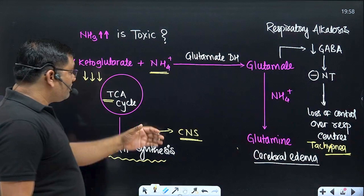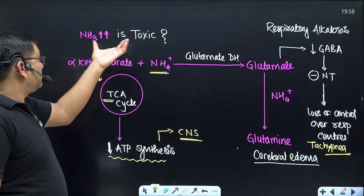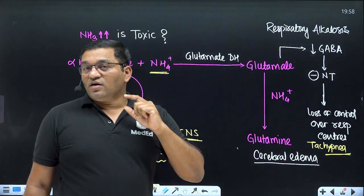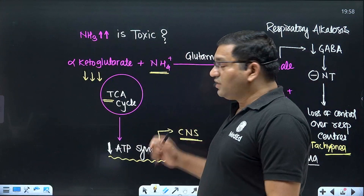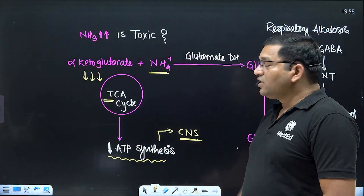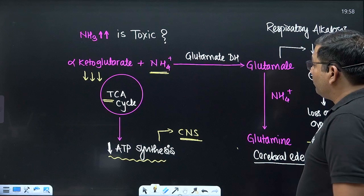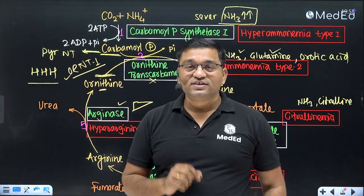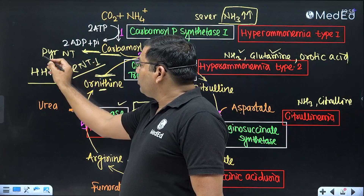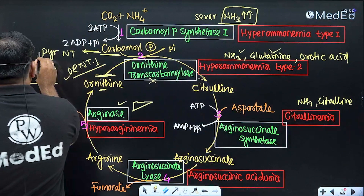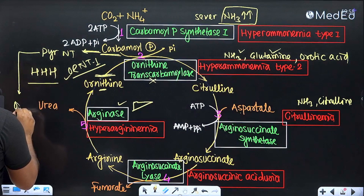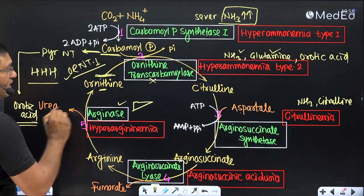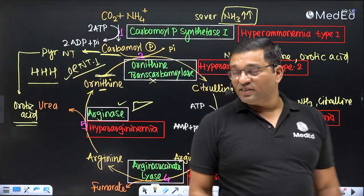This explains why there is respiratory alkalosis, why there are CNS manifestations, and why ammonia is toxic — because it depletes ATP levels via depletion of alpha-ketoglutarate. Regarding orotic acid urea: the accumulated carbamoyl phosphate is diverted for pyrimidine nucleotide synthesis, and orotic acid — an intermediate of pyrimidine nucleotide synthesis — is formed and excreted in the urine.